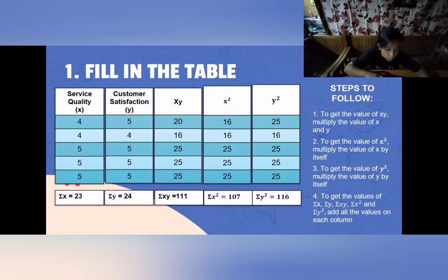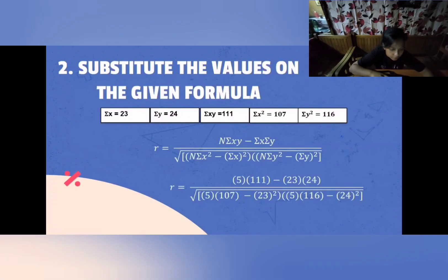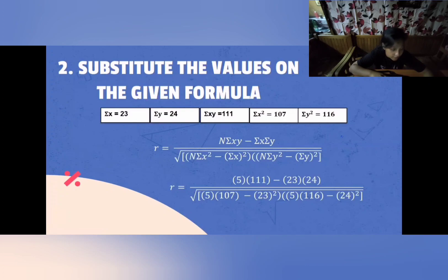We will be using summation of x, summation of y, summation of xy, summation of x squared, and summation of y squared in the formula. This is the formula, and these are the values we just obtained, so we will substitute them. n is the total number of pairs — we have 5 pairs, so n = 5.